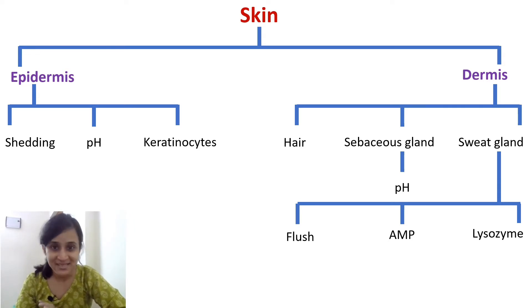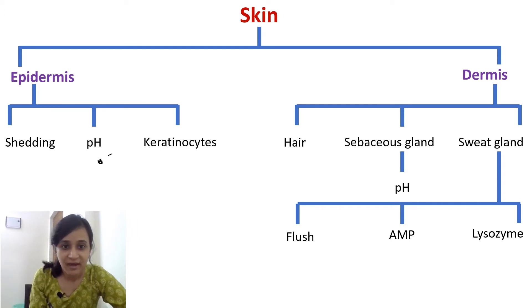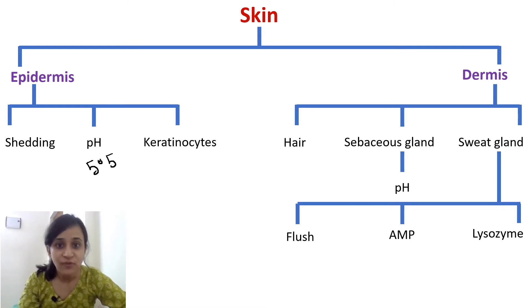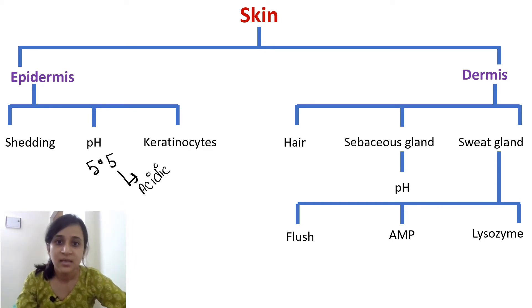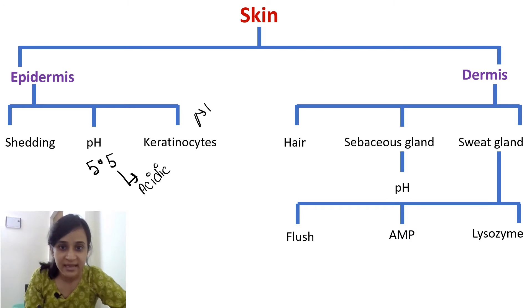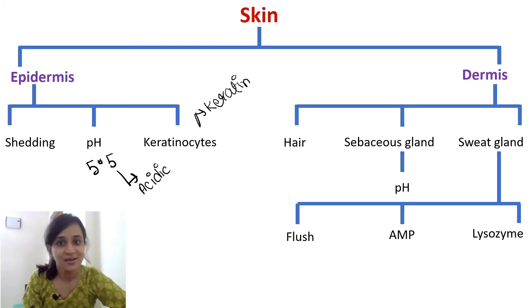Shedding just removes pathogens from our skin. Our skin has a natural pH of 5.5, and this lower, acidic pH also inhibits the growth of some microorganisms. Epidermis also contains a special type of cell called keratinocytes, which produce keratin. Keratin is a protein that makes the surface of the skin mechanically tough, which inhibits injury by some pathogens.